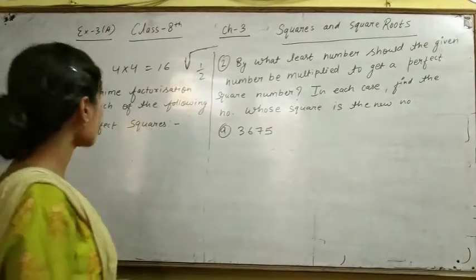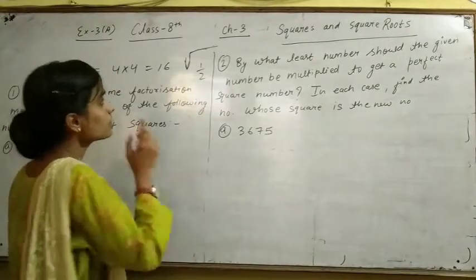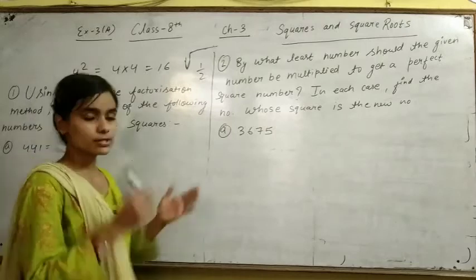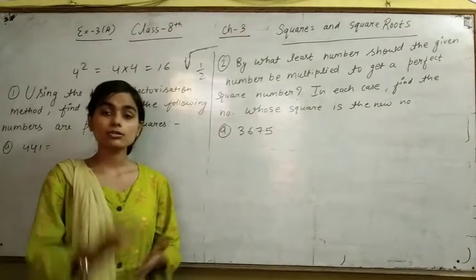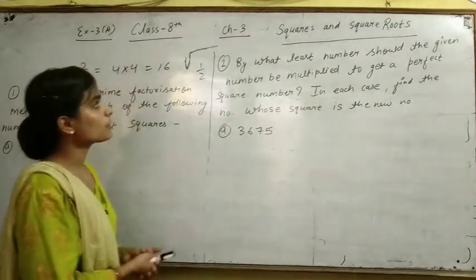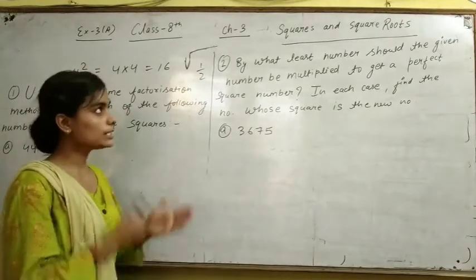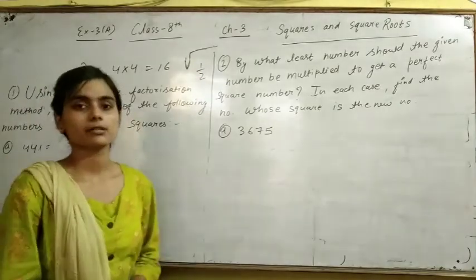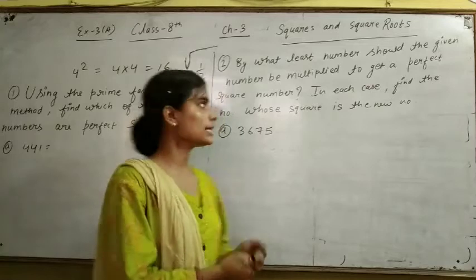Hello students, this is Chapter 3 on squares and square roots. A square is a product of equal numbers. What is a square?